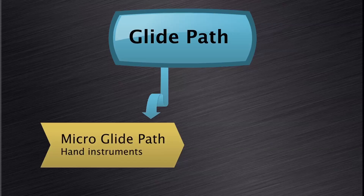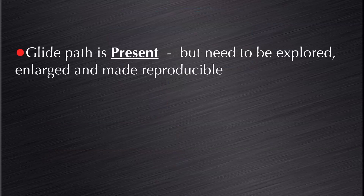A reproducible micro glide path can only be prepared with hand instruments — small hand instruments like a size 08 or 10 K file, depending on the initial size of the canal. We have to understand that many canals already have a micro glide path present, but the problem is that they are not reproducible.